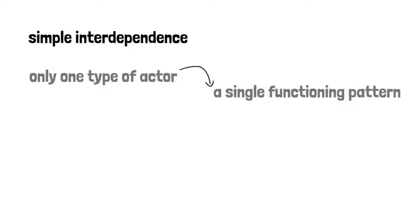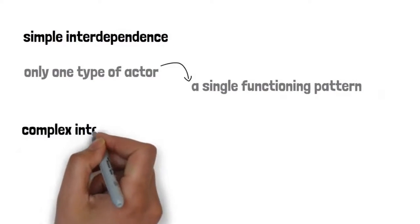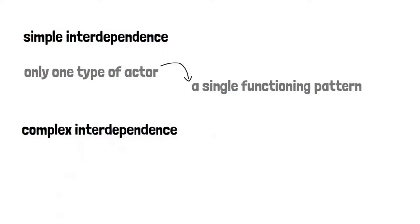For realism, the fact that we have only one type of actor leads to a type of process that causes an interaction to emerge with a single functioning pattern, which creates a context of repeatable patterns of interdependence.